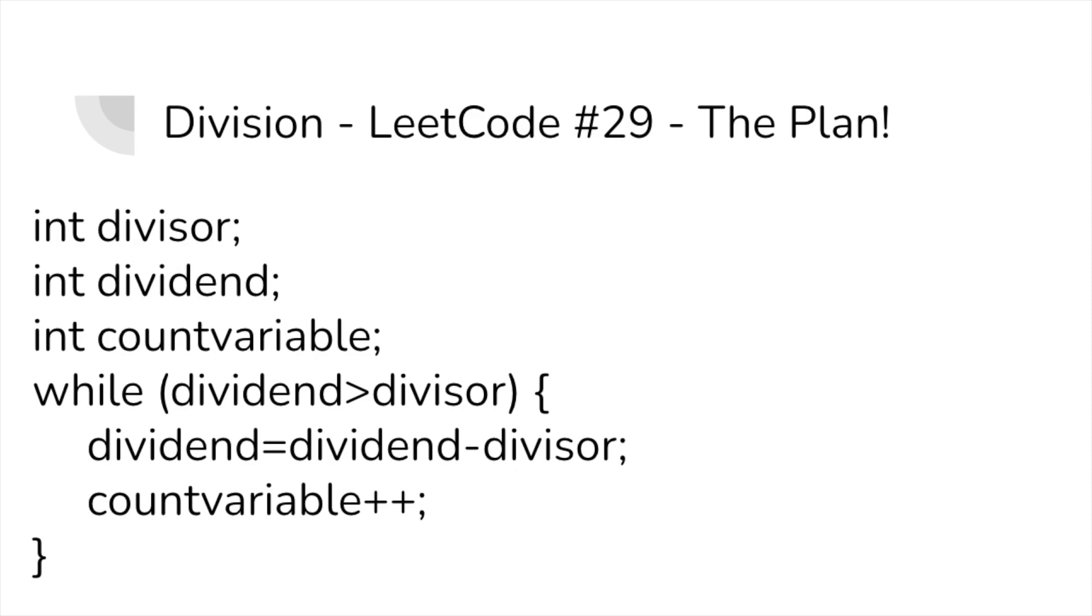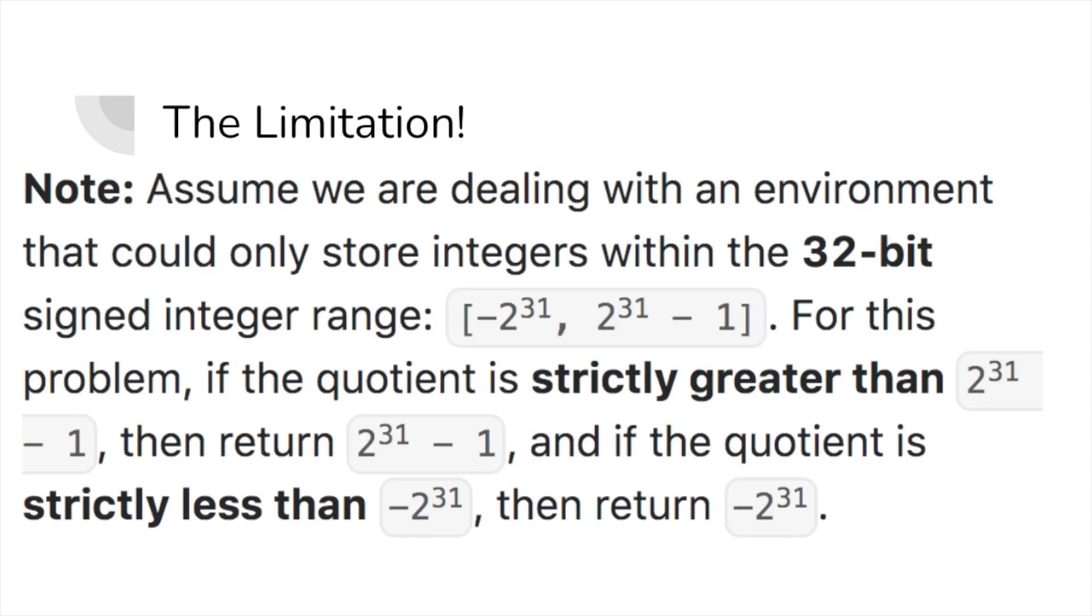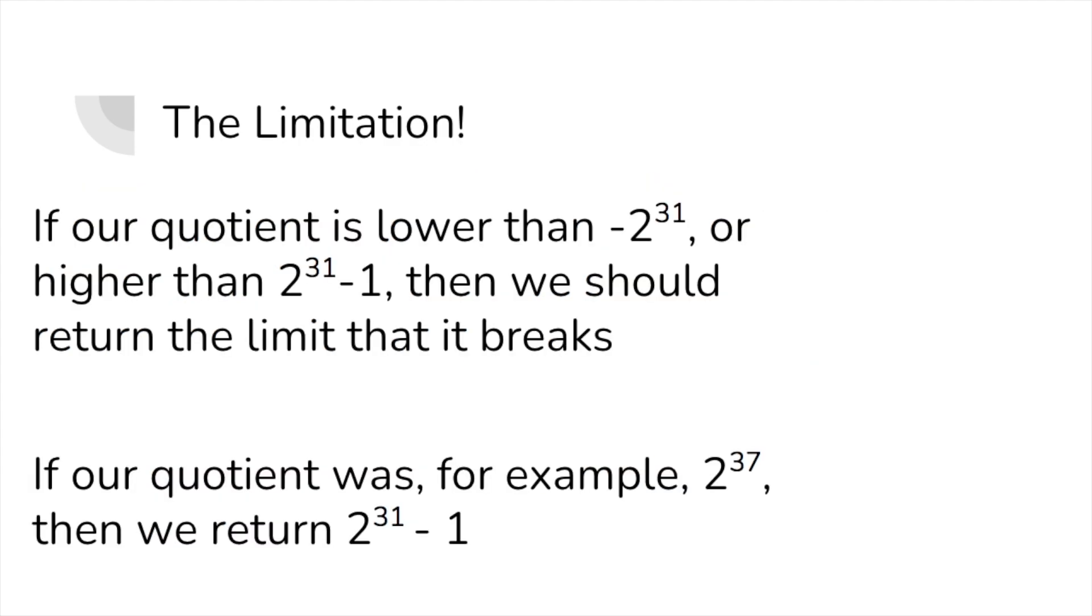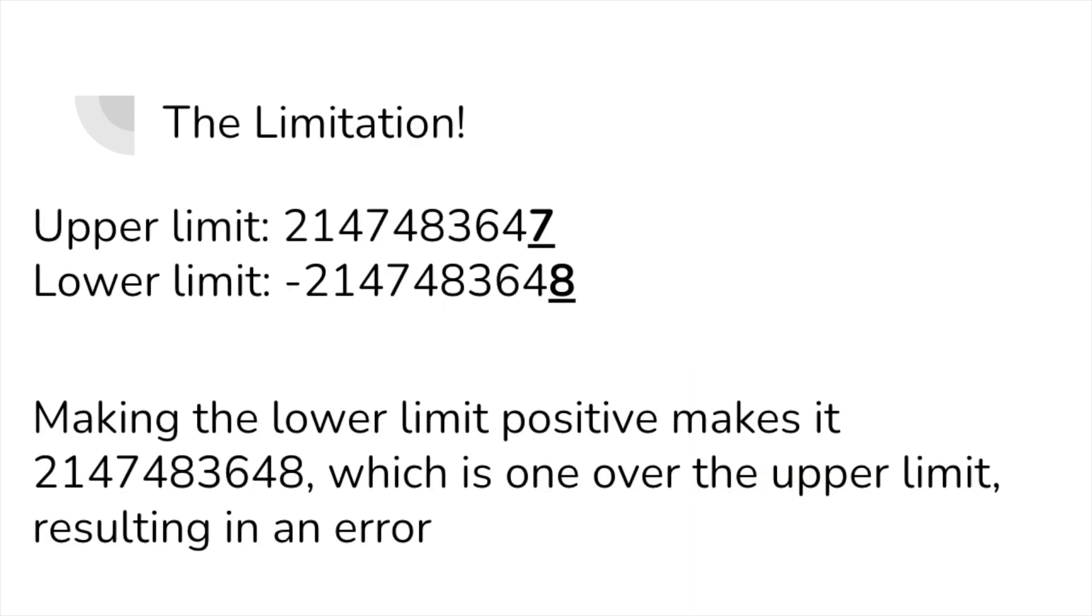That would be easy enough if it weren't for this next limitation. We have to check if the quotient of our numbers is between the integer limit range, and we have to return either the lower or upper integer limit depending on what part our quotient breaks through. The reason this is an issue is because the upper limit is 2 to the 31st minus 1, while our lower limit is negative 2 to the 31st. This means that if we made the lower limit positive, it would cause an integer overflow error and make this project fail.